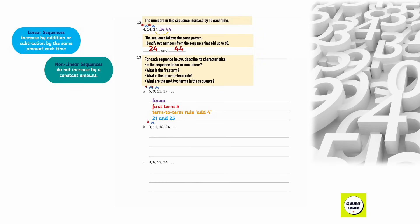For the sequence 3, 11, 18, 24: the difference between 11 and 3 is 8, between 18 and 11 is 7, and between 24 and 18 is 6. So the next difference would be 5, then 4 — this is a non-linear sequence since the difference is not constant. The first term is 3, the term-to-term rule is add 8 then 1 less each time, and the next two terms are 29 and 33.